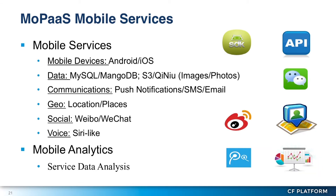For the mobile services we offer: we support different mobile platforms like Android and iPhone, data stores like MySQL, MongoDB, and others, external services like S3 and a similar S3 offering in China. Also communications like push notifications, SMS, and email, geolocation services, social services integrated with Weibo — a microblog service in China — and also WeChat. In addition, we provide mobile analytics to offer data analysis to developers.